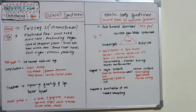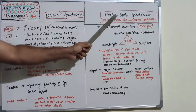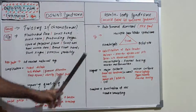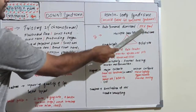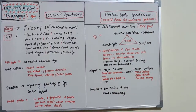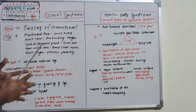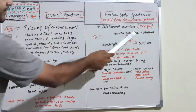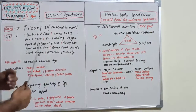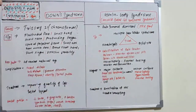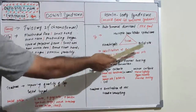Gorlin-Goltz syndrome is also known as nevoid basal cell carcinoma syndrome. Named after Gorlin and Goltz, it is an autosomal dominant genetic disorder, and the involved gene is PTCH1. It is expressed as a classical triad: multiple basal cell carcinomas (malignant), multiple odontogenic keratocysts, and bifid ribs — that is the classical triad of Gorlin-Goltz syndrome.